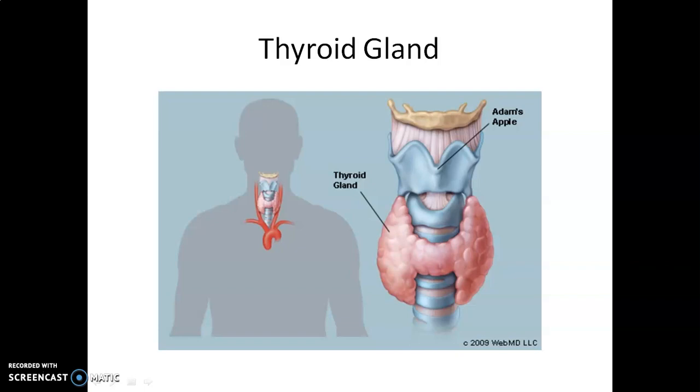In adult women, hypothyroidism may cause the menstrual cycle to become irregular.